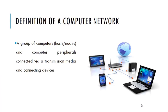The definition of a computer network is as follows: it's a group of computers — sometimes called hosts or nodes — and a group of computer peripherals, all connected together via transmission media and some connecting devices. All of these elements form what we call a computer network.